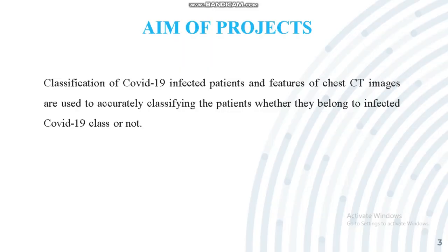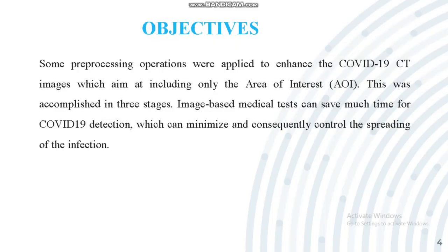Our aim of the project: COVID-19 infected patients and features of chest CT images are used to accurately classify the patients, whether they belong to the infected COVID-19 class or not. We can segregate whether a person is infected by COVID-19 using CT scan images with the help of a CNN algorithm. Our objective includes focusing only on the area of interest, accomplished in three stages, and COVID-19 detection to minimize and consequently control the spread of infection using our proposed method.